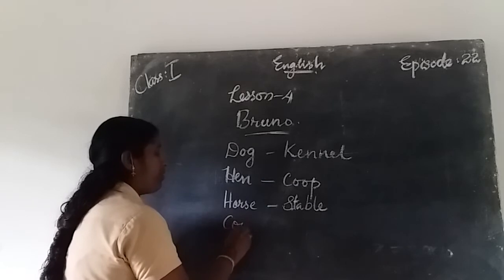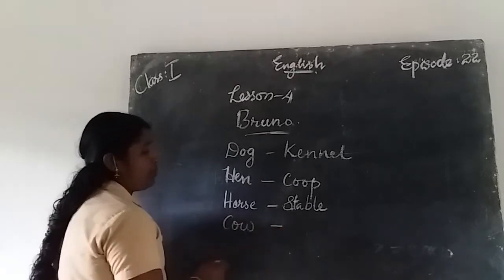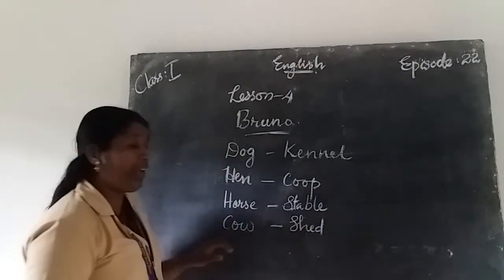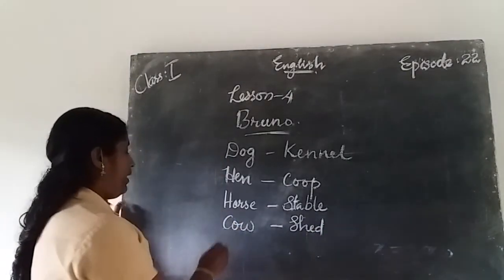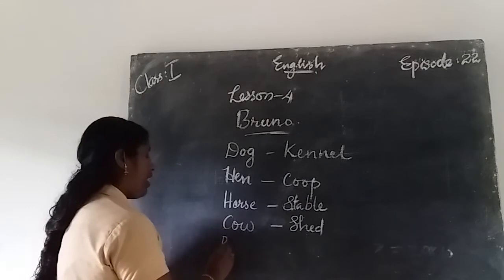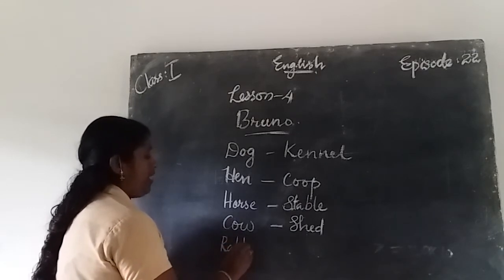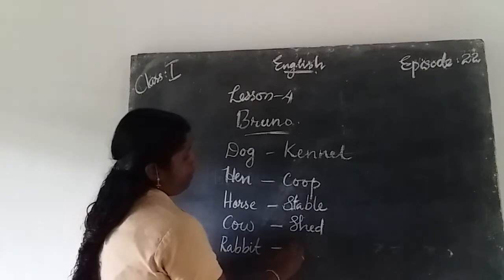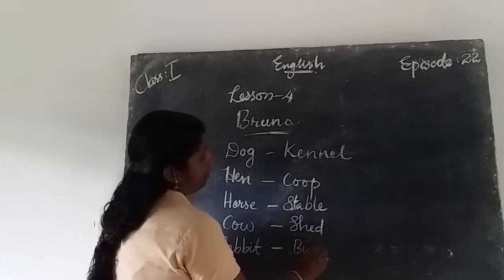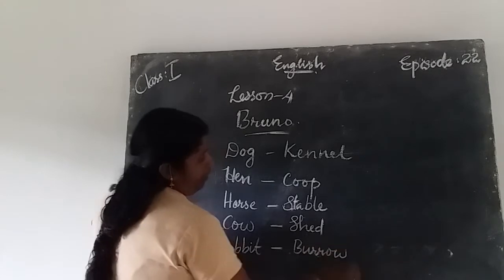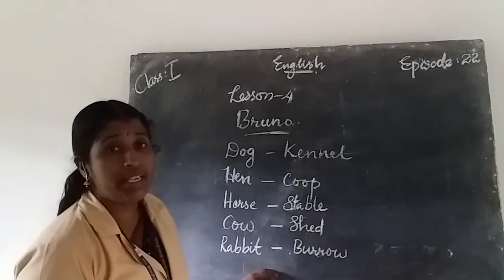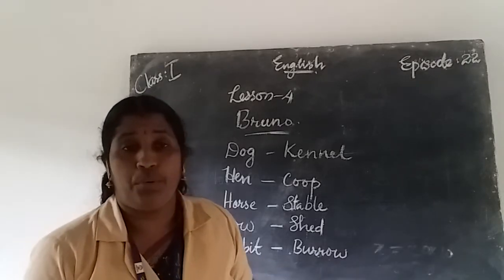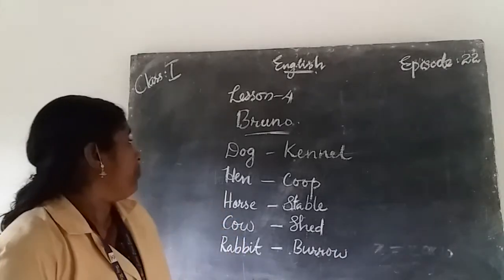The cow lives in a shed — S-H-E-D, shed. The house of a cow is shed. The next one is rabbit — R-A-B-B-I-T. The house of a rabbit is a burrow — B-U-R-R-O-W, burrow.